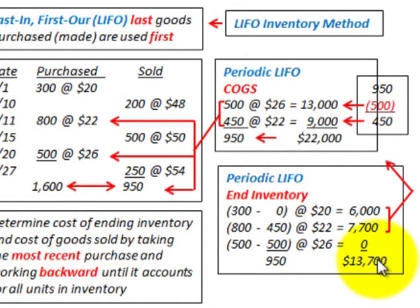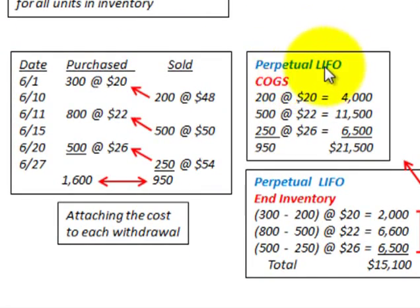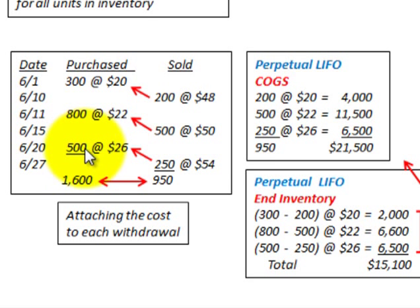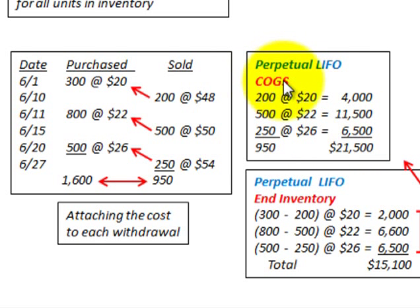Now let's look at the perpetual LIFO method, where we attach the cost to each withdrawal as it happens. Taking our first sale of 250 units, those go against the most recent purchases of 500 units at $26 each — 250 units at $26 gives us $6,500 in cost of goods sold for that sale.